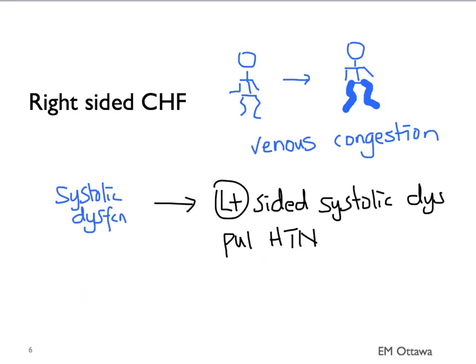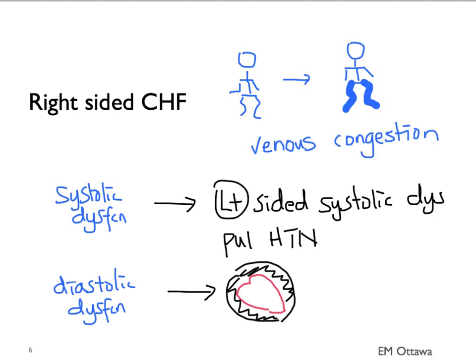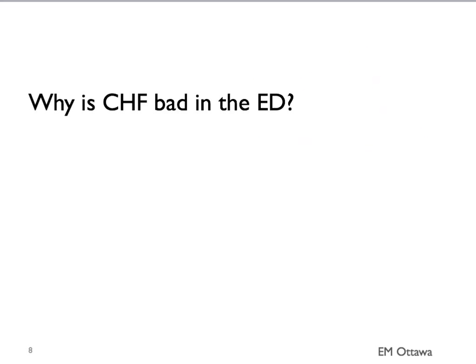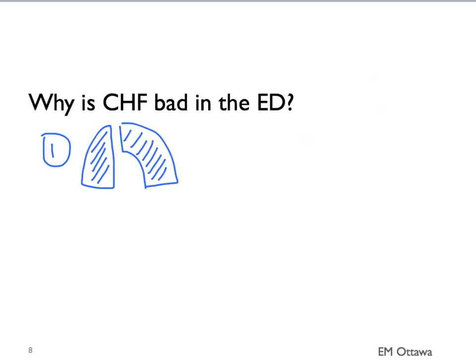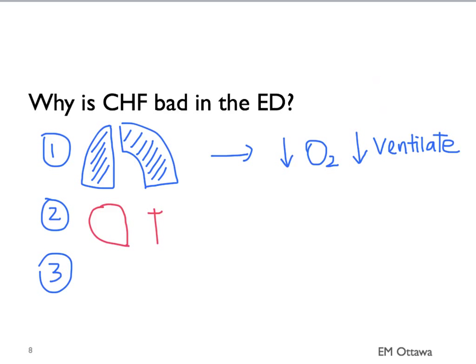Right-sided diastolic dysfunction can happen, however, in cardiac tamponade. Why is congestive heart failure bad for patients in the emergency department? First, pulmonary edema affects ventilation and oxygenation. Second, patients can also have sudden cardiac death. Third, due to inadequate systemic organ perfusion, patients can have end-organ failure.